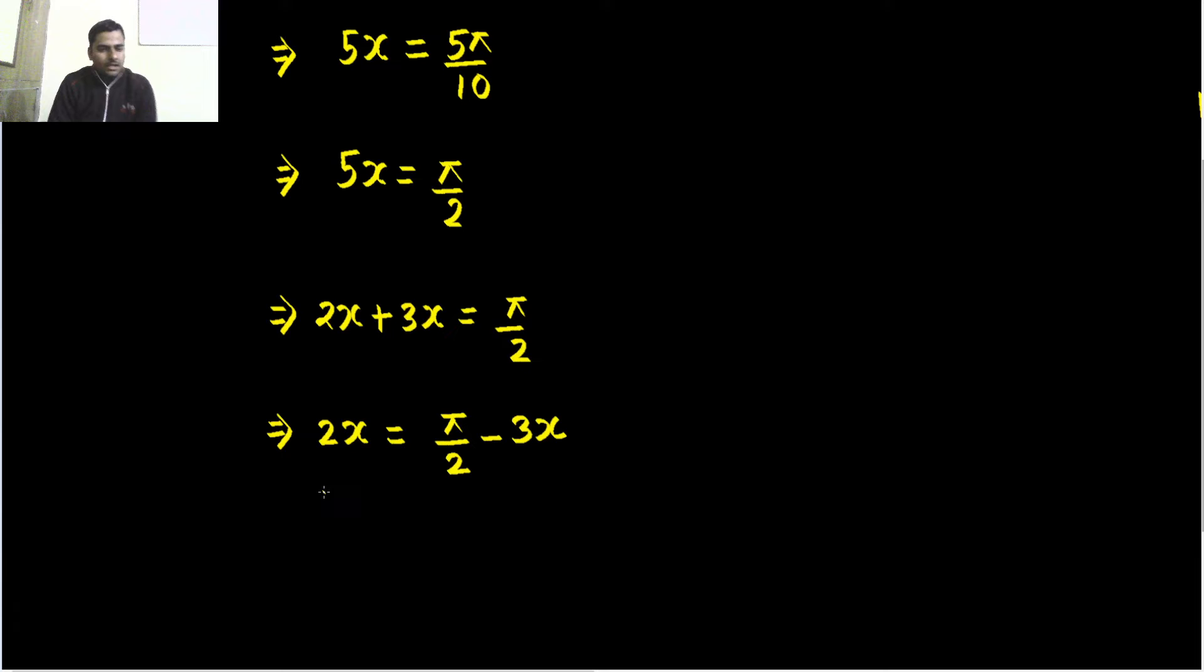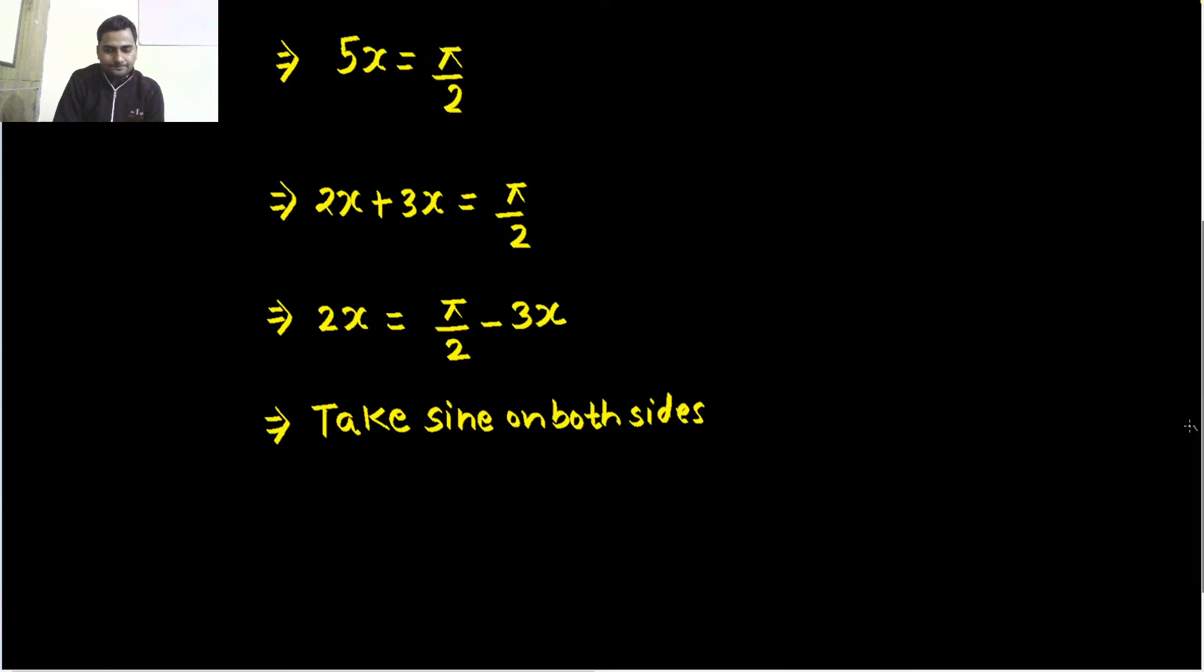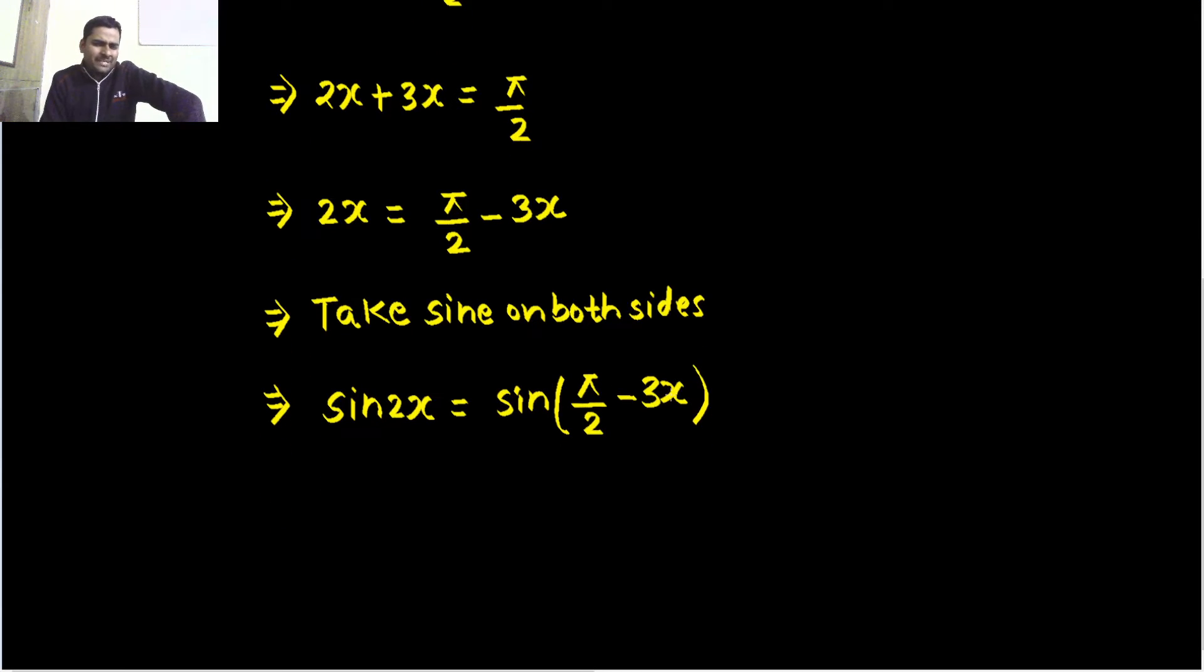Now, if I take sine on both sides now, because sine is an operator, what will I get? I will get sin 2x equals to sin 90, which is pi by 2 minus 3x. This is the reason why I took 3x to the other side. Because now, sin 90 minus theta is cos theta, so this becomes sin 2x equals cos 3x.